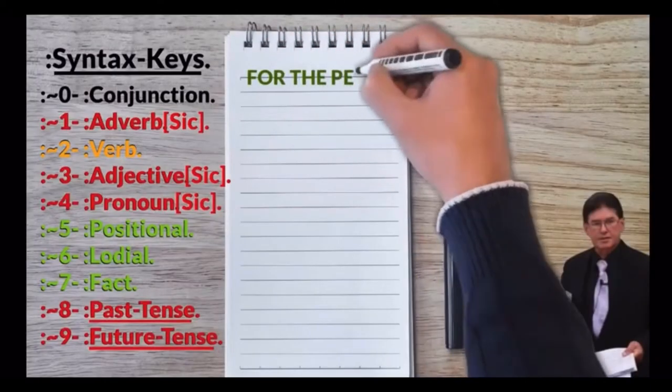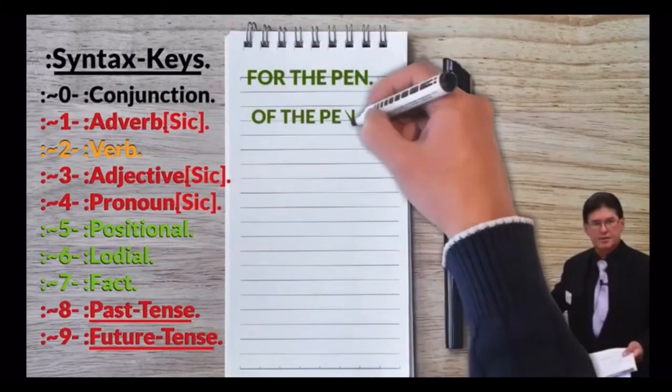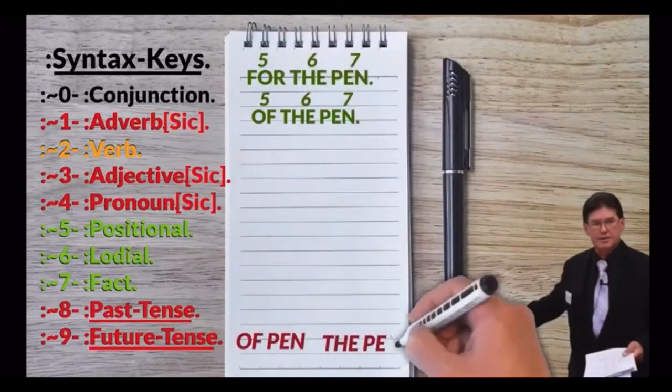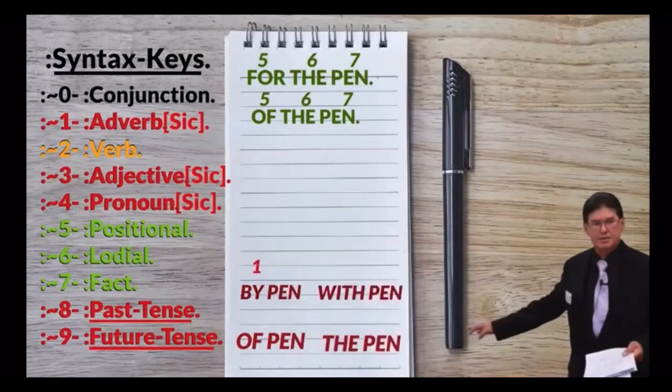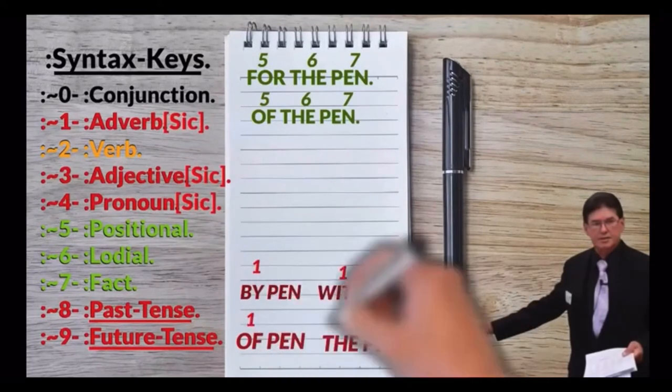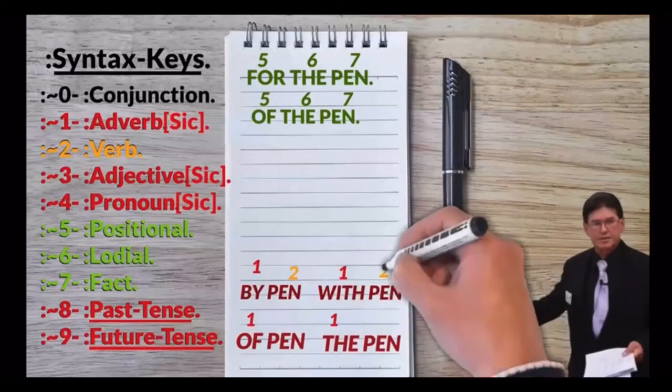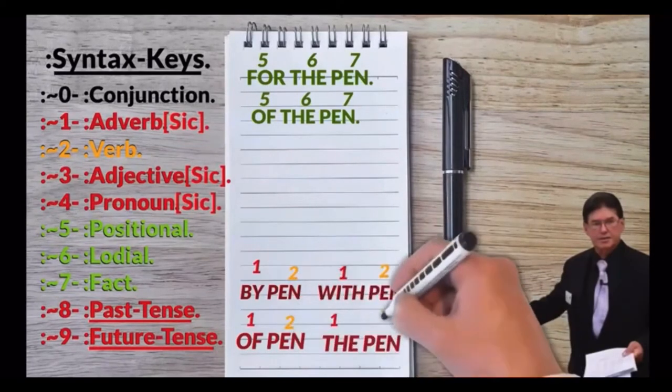Now if I say of pen, of is normally the preposition and that was the article. Separated, they both become adverbs. So now you have an adverb of pen or by pen or with pen or over pen, under pen, doesn't matter how you do it. If you separate all the prepositions and all the articles, this is going to become a verb. Now if you use a prepositional phrase,